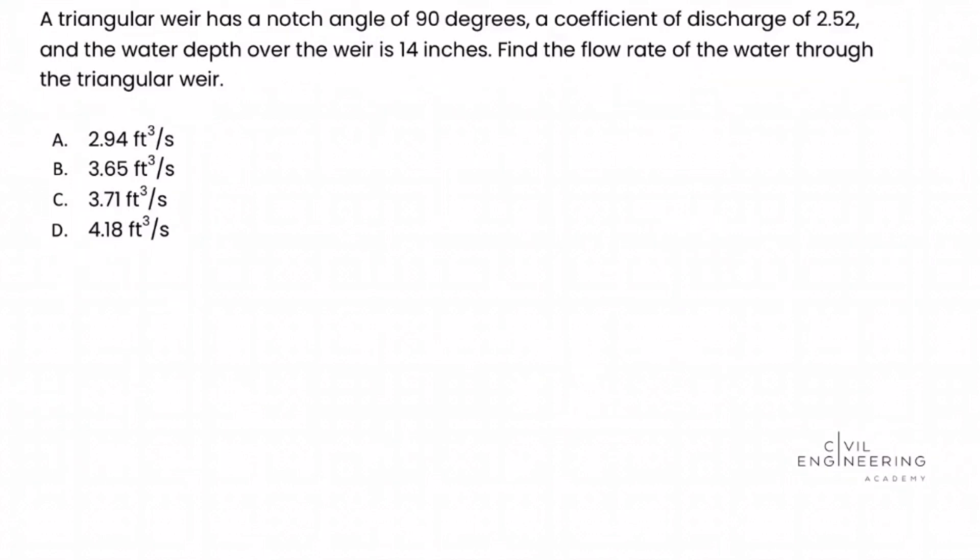Find the flow rate of the water through the triangular weir. So to solve this problem we're going to turn over to the PE reference handbook, and at the time of this recording we're using version 1.2 of the handbook